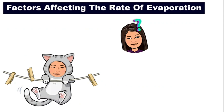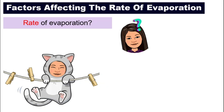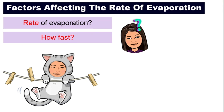So what are some factors that affect the rate of evaporation? Before we look at the factors, we have to understand what is the meaning of the rate of evaporation. In science, when we see the word rate, it means how fast — rate has to do with time. So the rate of evaporation means how fast can the evaporation happen.